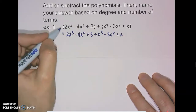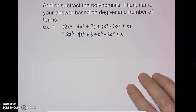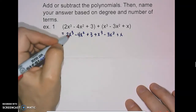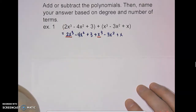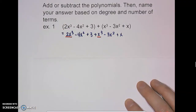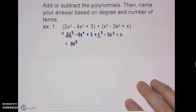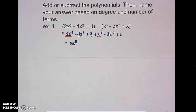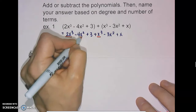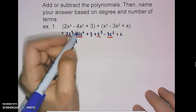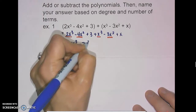So now we need to look at what are like terms to combine, and they need to be in standard form, meaning we look for the highest exponent first. We have 2x cubed and x cubed — combining those gives us 3x cubed. Next we look at the x squared terms: negative 4x squared and negative 3x squared combine to give us negative 7x squared.